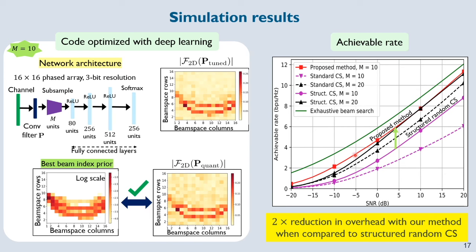Due to the smart design of the spatial code in 2D CCS, our approach achieves performance comparable to exhaustive search with just 10 measurements instead of 256. To achieve the same performance, structured random technique takes about 20 measurements and standard CS with a random design takes several more.